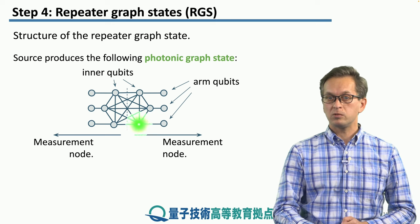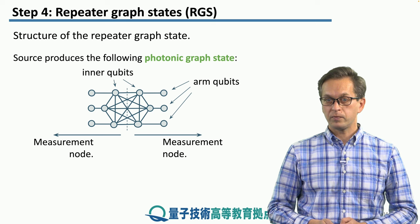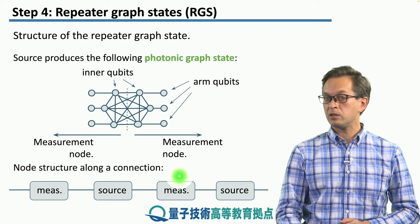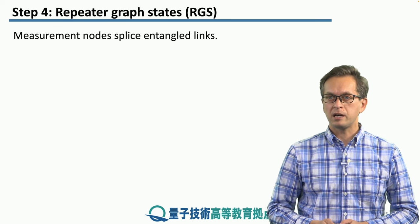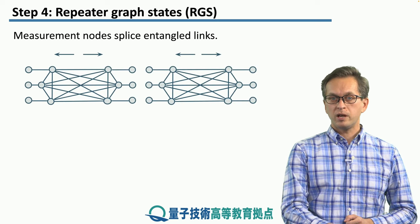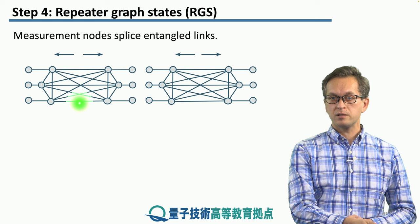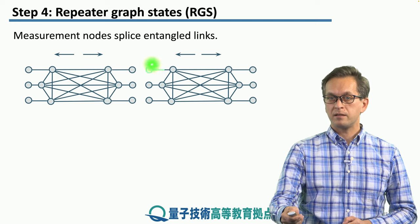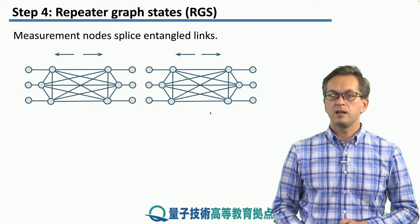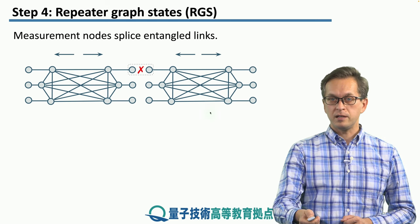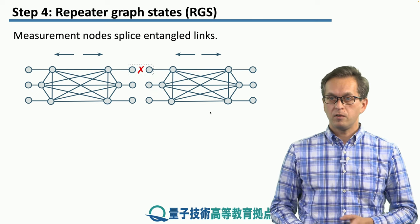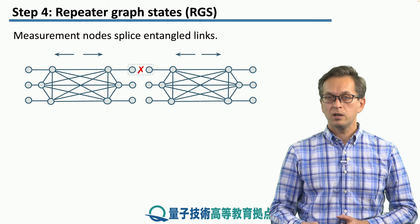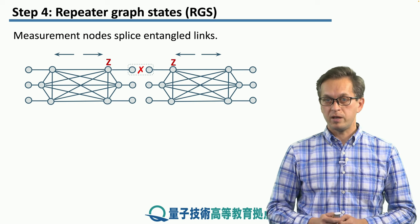We split the repeater graph state into two halves, where one half is sent to a measurement node to the right and one half is sent to the measurement node to the left. The overall structure of a connection alternates: measurement node, source node, measurement node, source node. Consider two sources: one source produced an RGS and another source also produced an RGS. The two halves of the RGSs meet at the measurement node. First, the measurement node must attempt a Bell state measurement at these arm qubits. Let's say it fails — without the RGS we would have broken the entire connection, but here it's not a problem. All we have to do is measure the arm qubits' neighbors in the Z basis.